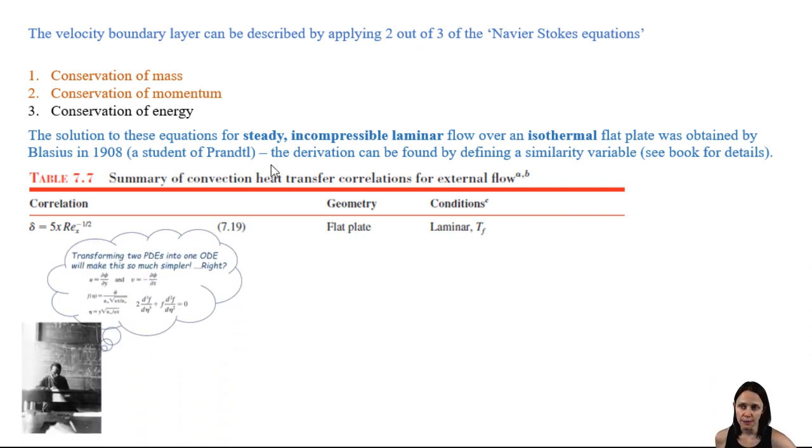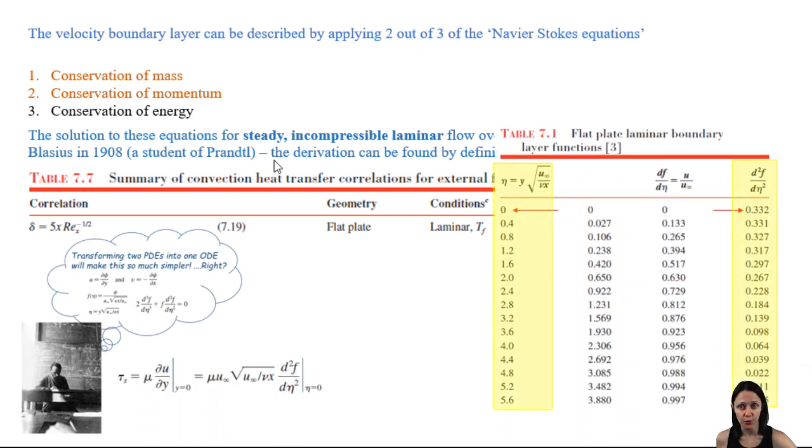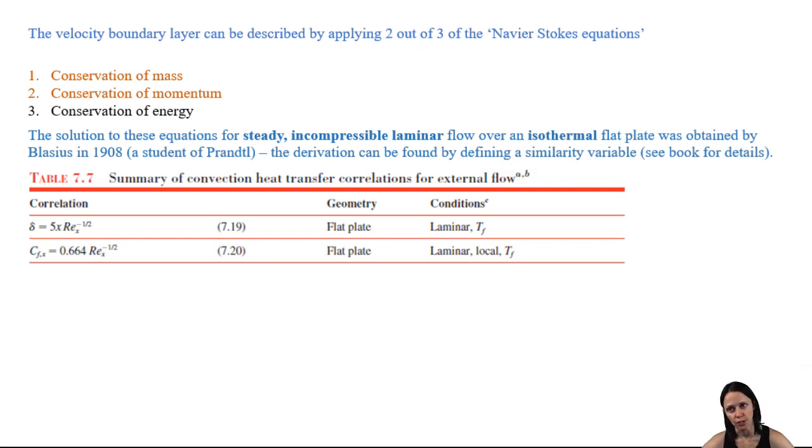He was able to use the same solution to calculate the local shear stress. The second derivative of f with respect to his similarity value evaluated at y equals 0 gives us 0.332. And then plugging that into our equation for the local shear stress and using Blasius' solution, we get an equation that looks much simpler. And of course, we can relate that to the shear stress, relate the shear stress to the local friction coefficient, and that brings us to the next equation on our equation sheet.